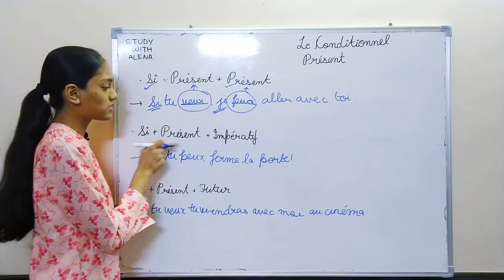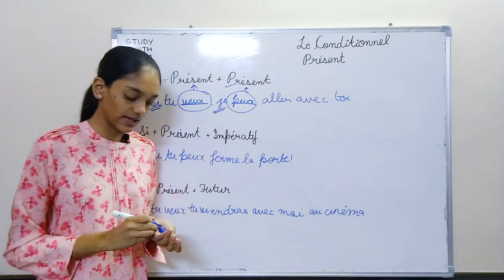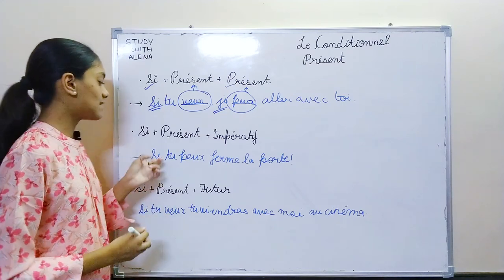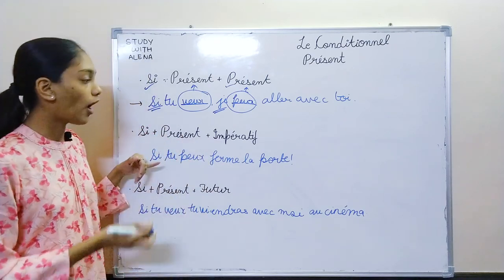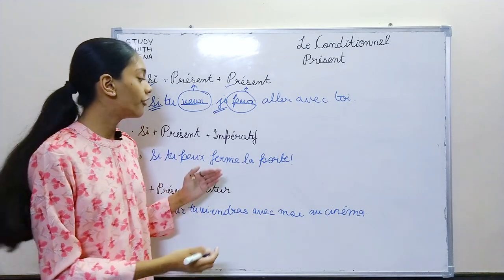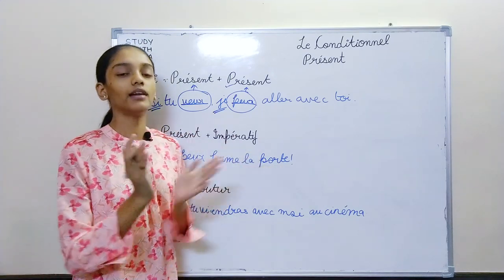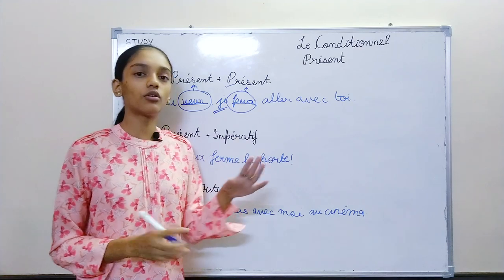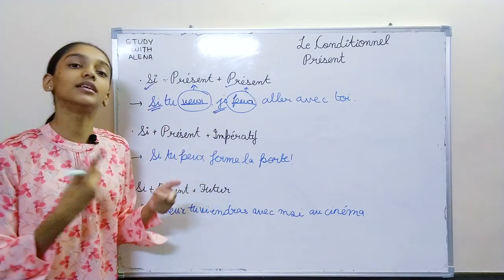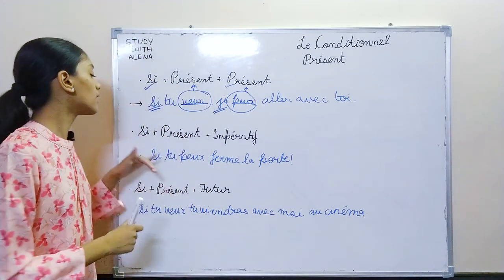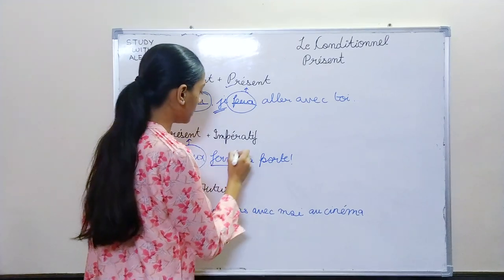The second expression is si plus present plus imperatif. Here you can understand the difference between imperatif and conditional present. The statement says: 'Si tu peux, ferme la porte' — if you could close the door. Or, if we say this in imperatif: 'Ferme la porte' — close the door. Now you can see the difference: imperatif is more of an order, and conditional present is a request — if you could please close the door. So we have si, tu peux in present, and ferme la porte in imperatif.